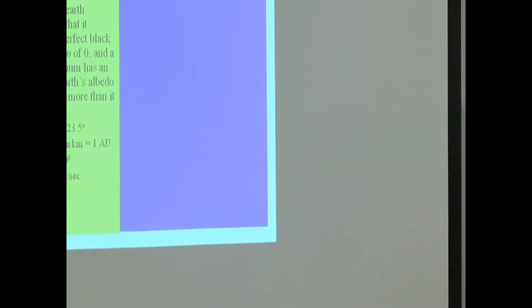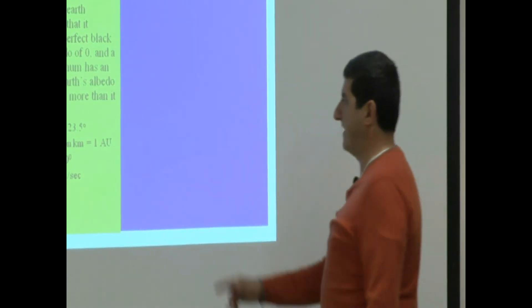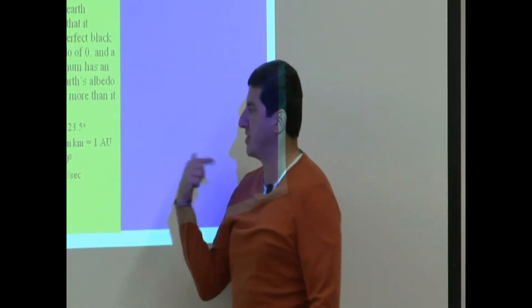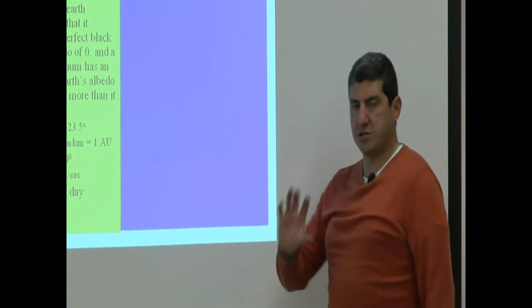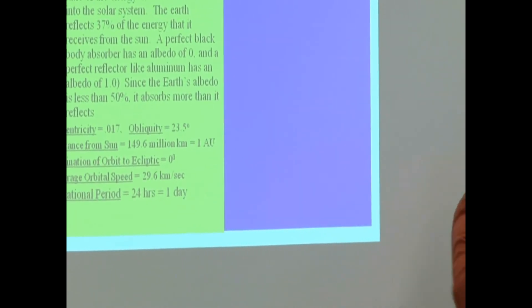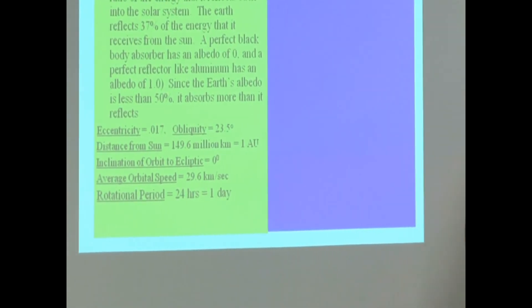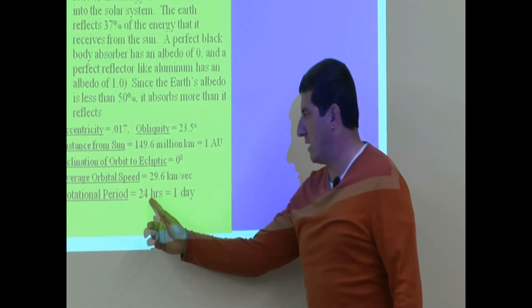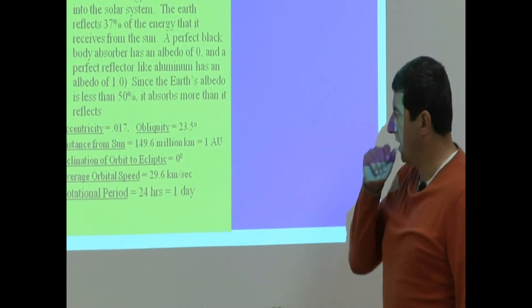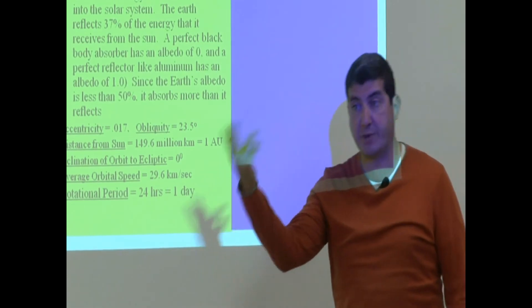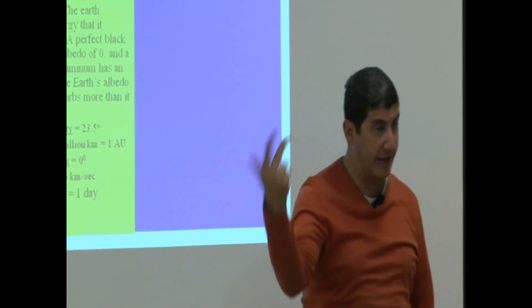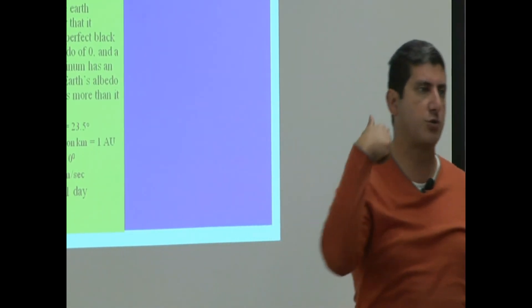Average orbital speed as it goes around the sun, 29.6 kilometers per second. That's how fast the earth is traveling around the sun. Rotational period, the time for it to go around once around its axis, 24 hours, which is one day. So when you're comparing your own rotation period of your planet, compare it to earth. When you're comparing the orbital speed, compare it to earth.